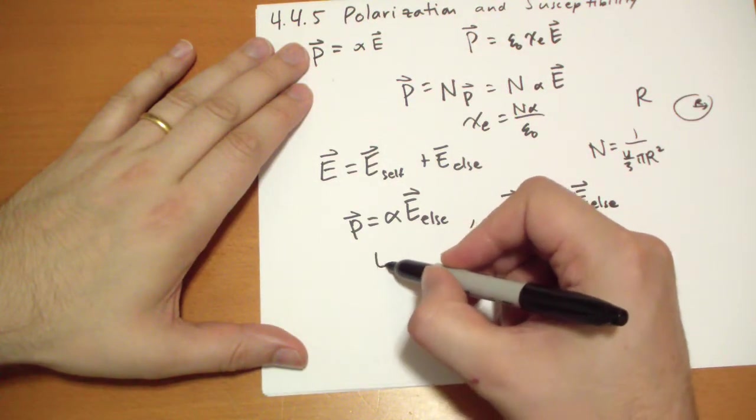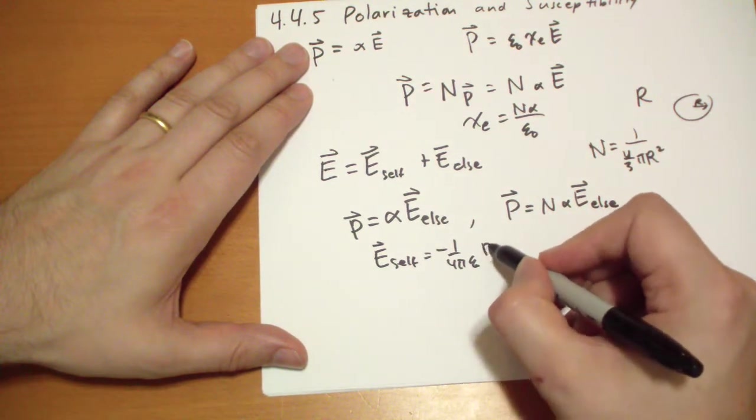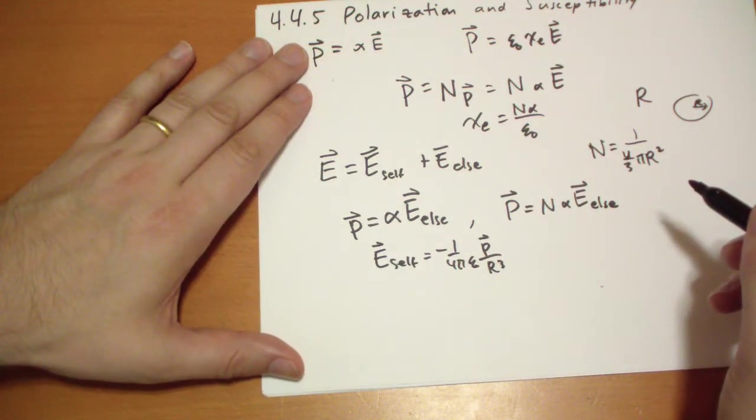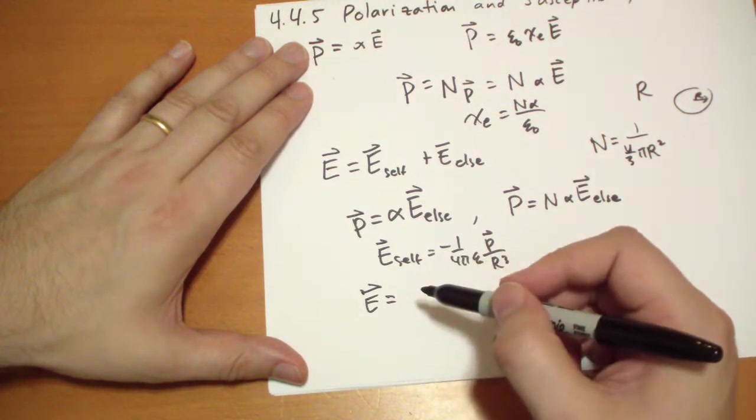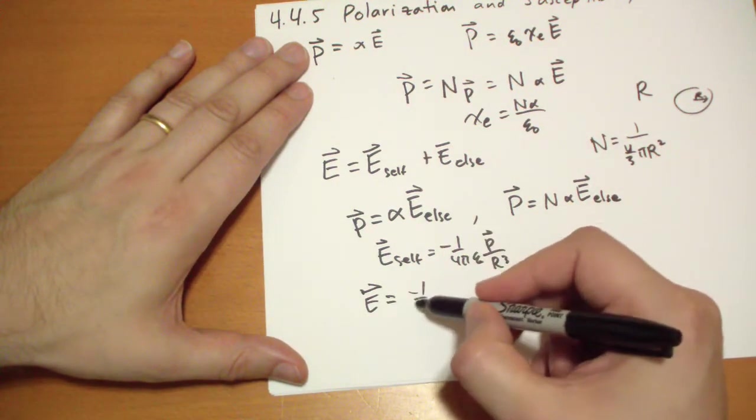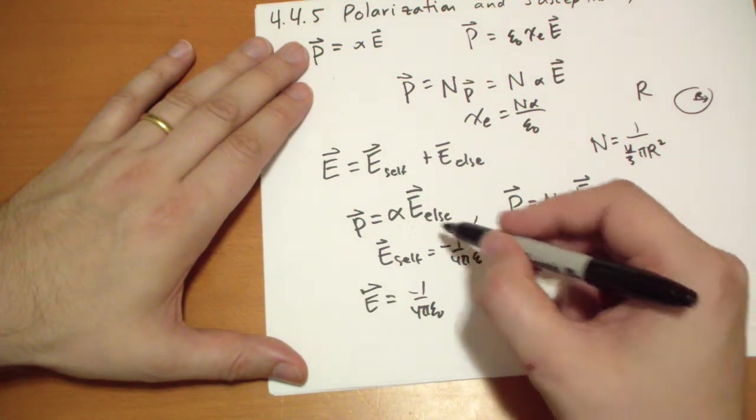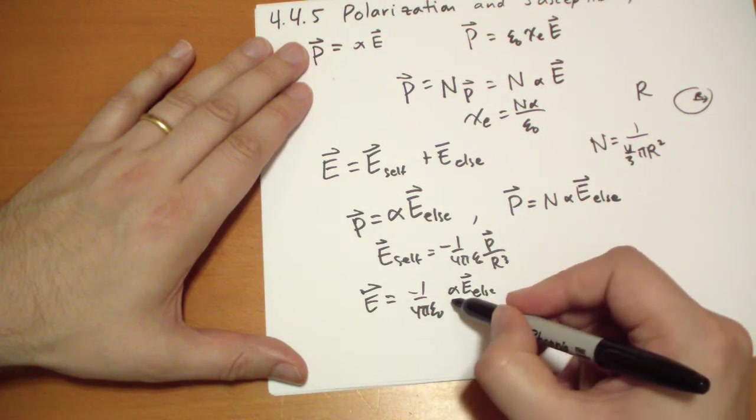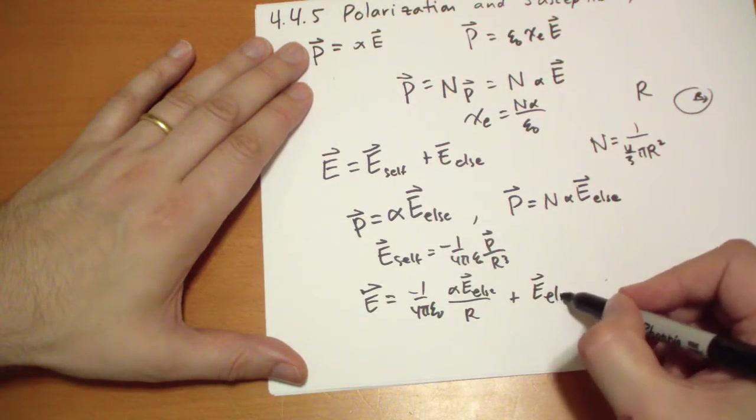So what's the electric field due to the dipole moment? That's just negative 1 over 4 pi epsilon-naught, the dipole moment, divided by R cubed. So the sum of these two, we take the self, negative 1 over 4 pi epsilon-naught, we're going to substitute in that this is actually alpha E-else. So we have alpha E-vector else, divided by R cubed, plus the electric field due to everything else.